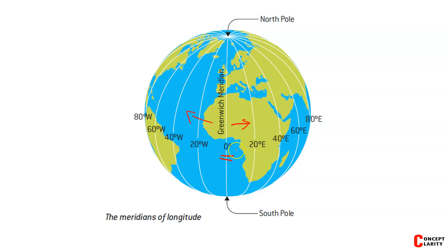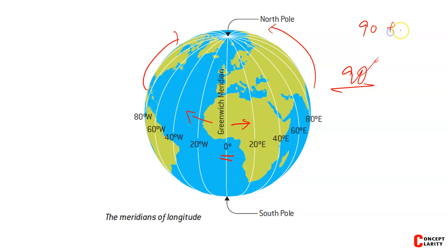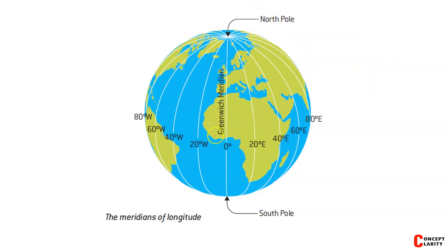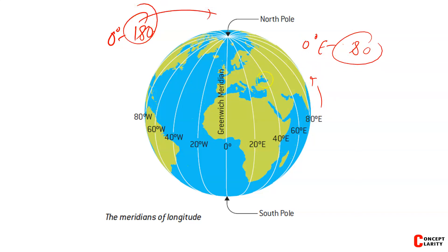So you can go east or west — 90 degrees each way, making it 180 degrees total. Starting from 0 degree west going to 180, and similarly 0 degree east going to 180. For example, 179 degrees west and 179 degrees east both approach 180 degrees. So here 180 degrees is common to both east and west.